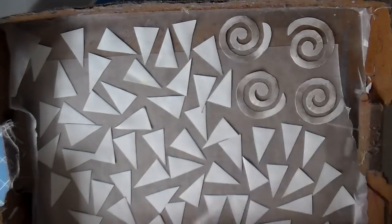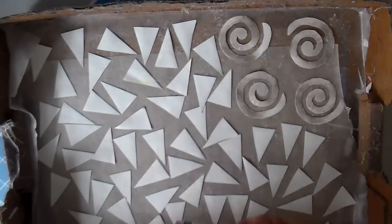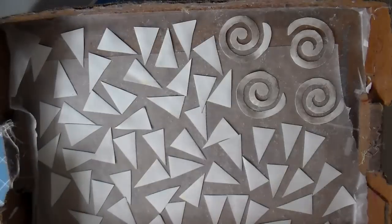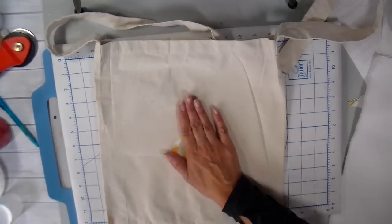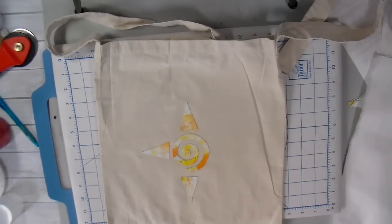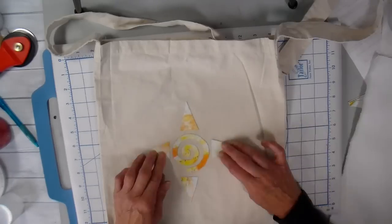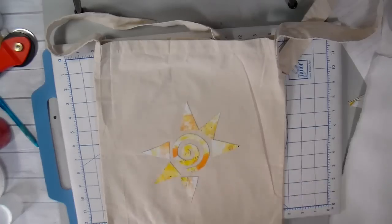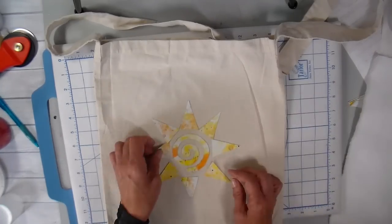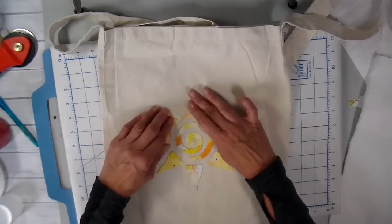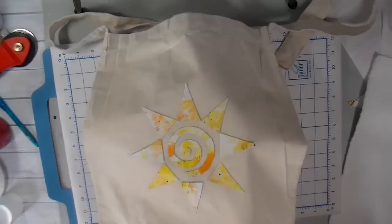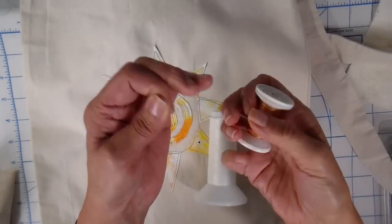I have an old box lid and I'm spraying this Heat and Bond basting spray on the backside of my appliques. This will not gum up your sewing machine at all and it will adhere the design to your project. This is a market bag tote that I'm doing. It has a really long handle on it and it just hangs right at your hip.